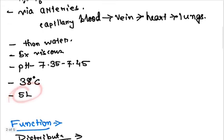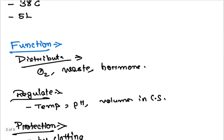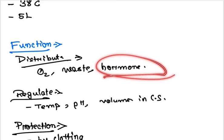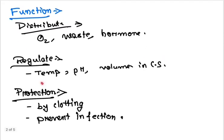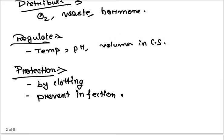Functions of blood include distribution, regulation, and protection. Distribution involves distributing oxygen, metabolic waste, and hormones. Regulation includes regulating temperature, maintaining pH in body tissue, and fluid volume in the circulatory system. Protection involves preventing blood loss by clotting and preventing infection.